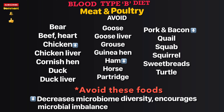Continuing meat and poultry to avoid: chicken liver, capon, hen, duck, duck liver, goose, goose liver, grouse, guinea hen, ham, horse, partridge, pork and bacon, quail, squab, squirrel, sweetbreads, and turtle.